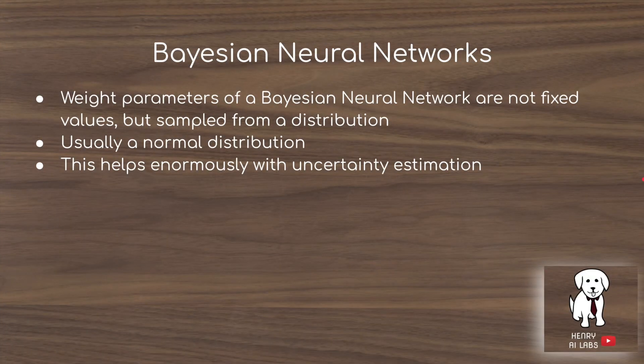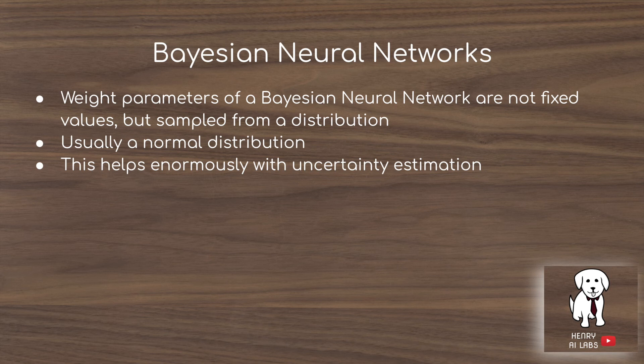Some other interesting ideas discussed in relation to weight agnostic neural networks are Bayesian neural networks. A Bayesian neural network has weight parameters that are not fixed values but are sampled from a distribution, usually a normal distribution. This helps enormously with uncertainty estimation, because you can resample the weight values to get different predictions — similar to how you form ensembles of weight agnostic neural networks by aggregating predictions across shared weight parameters from minus 2 to plus 2.